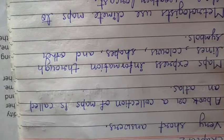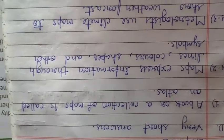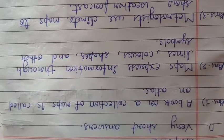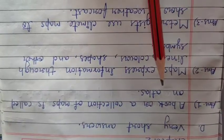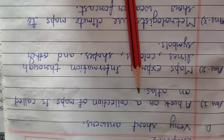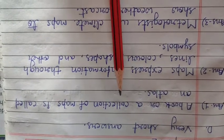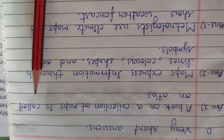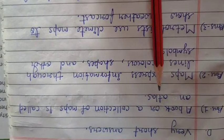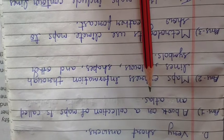What is an atlas? Answer number 1: a book or a collection of maps is called an atlas.